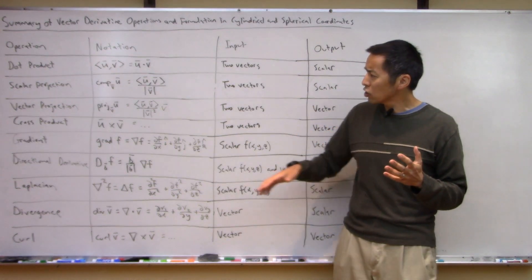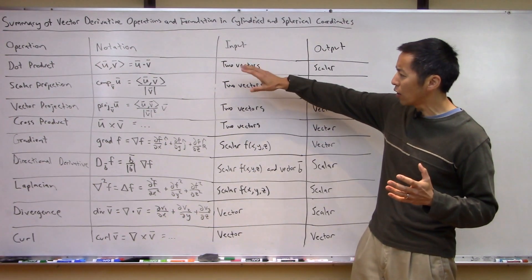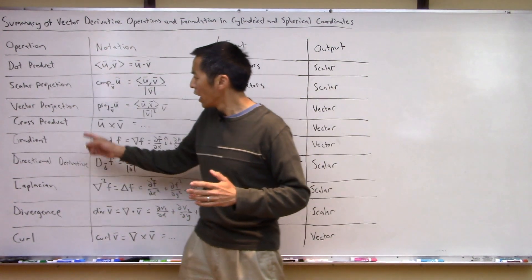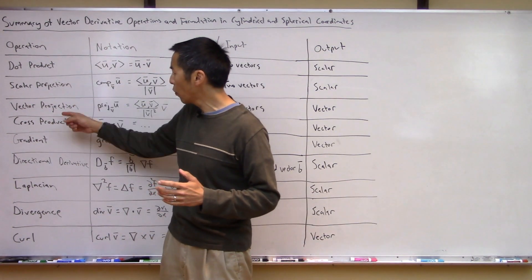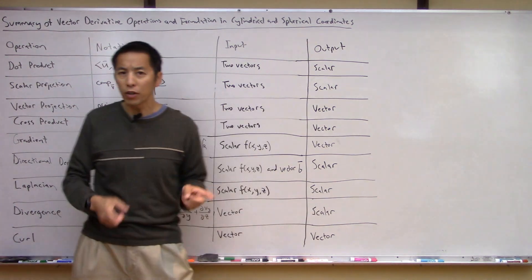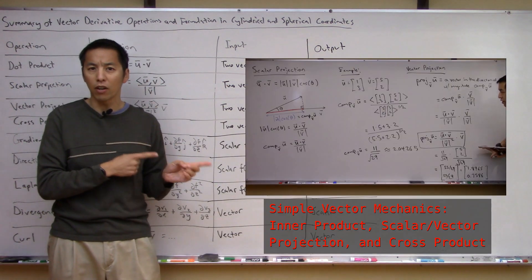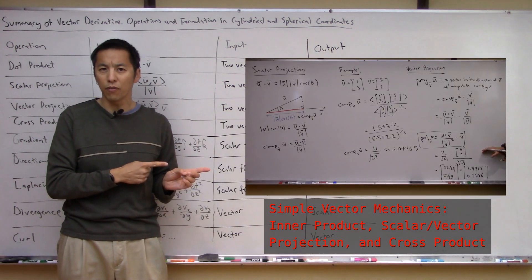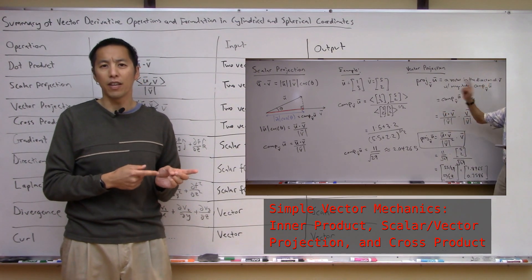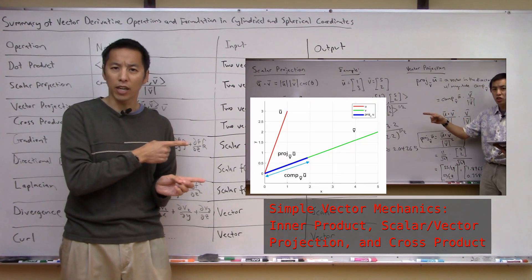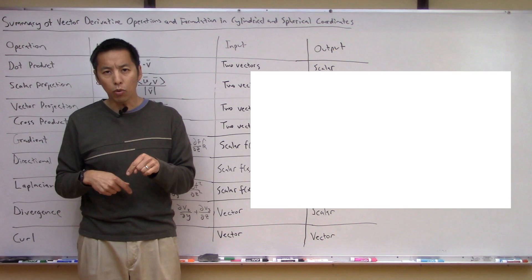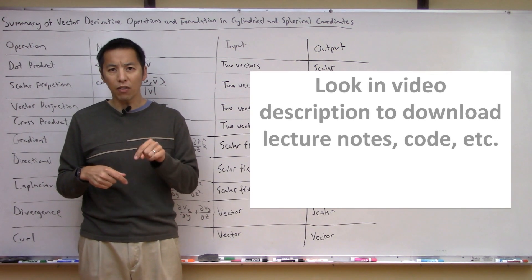To start off, let's begin with these first four: the dot product, scalar projection, vector projection, and cross product. We talked about those in a previous video, so if you want details on the derivation feel free to check that out or check out the notes for this video.